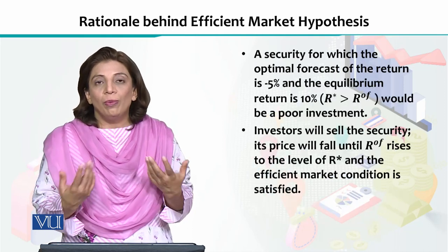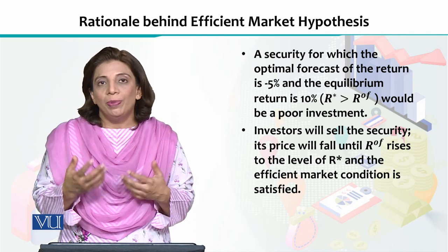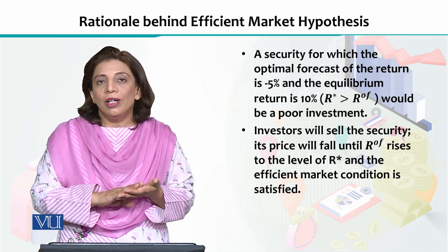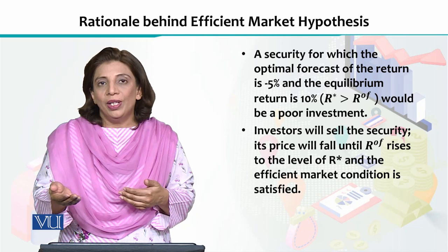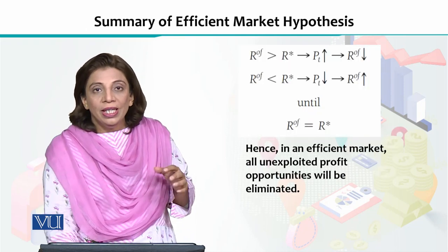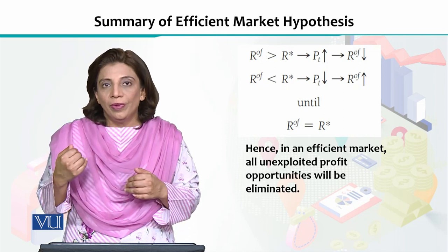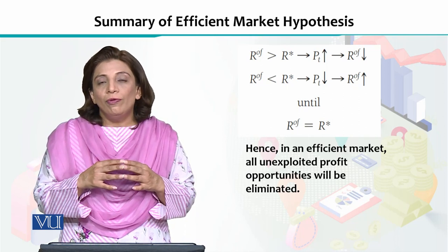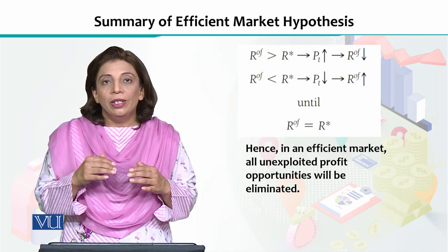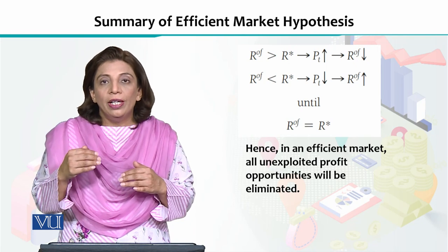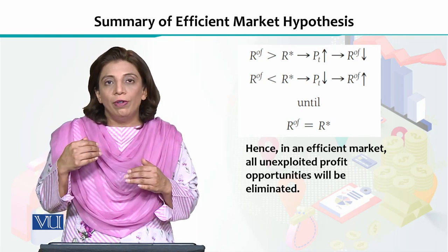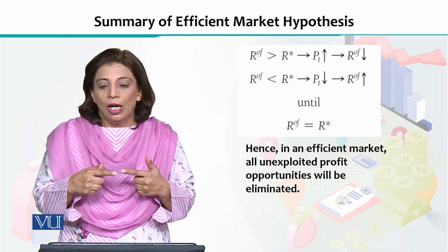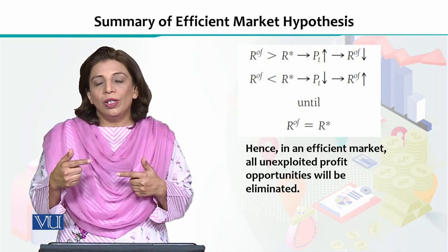Extra profit or extra opportunity of getting extra money will disappear because of these fluctuations. If the current price is low and the future price is expected to be higher, or vice versa, investors will be buying and selling accordingly, which can be summarized by the symbols used. If the optimal forecasted return will be higher than the equilibrium rate of return, everybody will start buying more of that stock, causing greater demand and the price will go up. When the price goes up, the optimal forecasted return will decline.